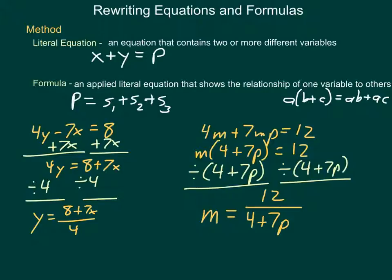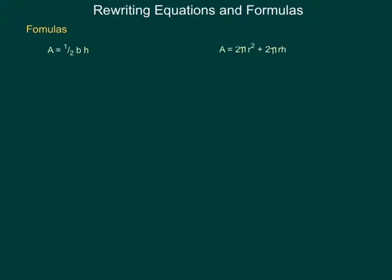Now, how do I isolate my variable m? Well, this group in parentheses is being multiplied by m, and we undo multiplication with division. I'm simply going to divide 4 + 7p from both sides, leaving me with m = 12 / (4 + 7p). So we can use distribution, other principles of mathematics that we know, to do what's necessary to isolate these variables. Now let's look at how this can apply to some formulas. Our first formula, A = ½bh, hopefully you recognize, is the area formula for a triangle.